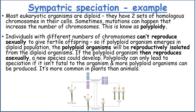As an example of sympatric speciation: most eukaryotic organisms are diploid — they have two sets of homologous chromosomes in their cells. Sometimes mutations can happen that increase the number of chromosomes; this is known as polyploidy. Individuals with different numbers of chromosomes can't reproduce sexually to give fertile offspring. So if polyploid organisms emerge in a diploid population, they will be reproductively isolated. If the polyploid organisms then reproduce asexually, a new species could develop. Polyploidy can only lead to speciation if it isn't fatal to the organism, and it's a lot more common in plants than in animals.